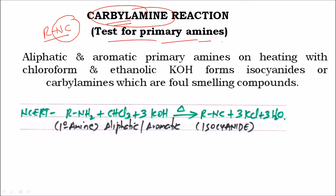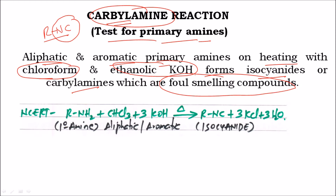This reaction is a test for primary amines — only primary amines will give the carbylamine reaction. Both aliphatic and aromatic primary amines will give this test as positive. The reagents in the carbylamine reaction are chloroform and ethanolic potassium hydroxide. The mixture of CHCl3 and alcoholic KOH forms isocyanides, also called carbylamines. These compounds are foul-smelling, so by odor one can easily identify whether the amine taken is primary.